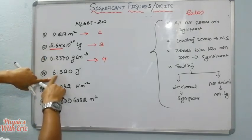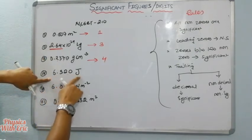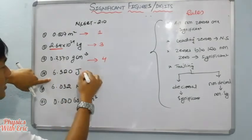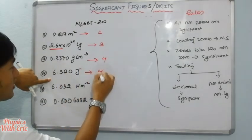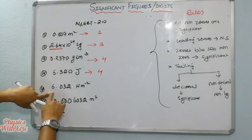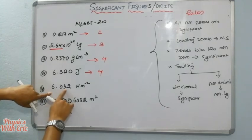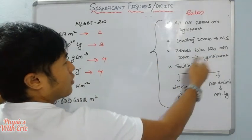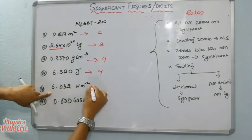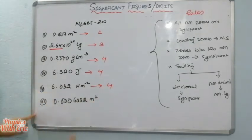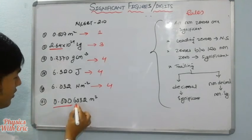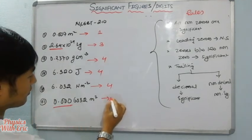Question four: 6.320 joules. The trailing zero after the decimal point is significant. Zeros between two non-zero digits are significant. Leading zeros are non-significant. So 6.320 has 4 significant figures.